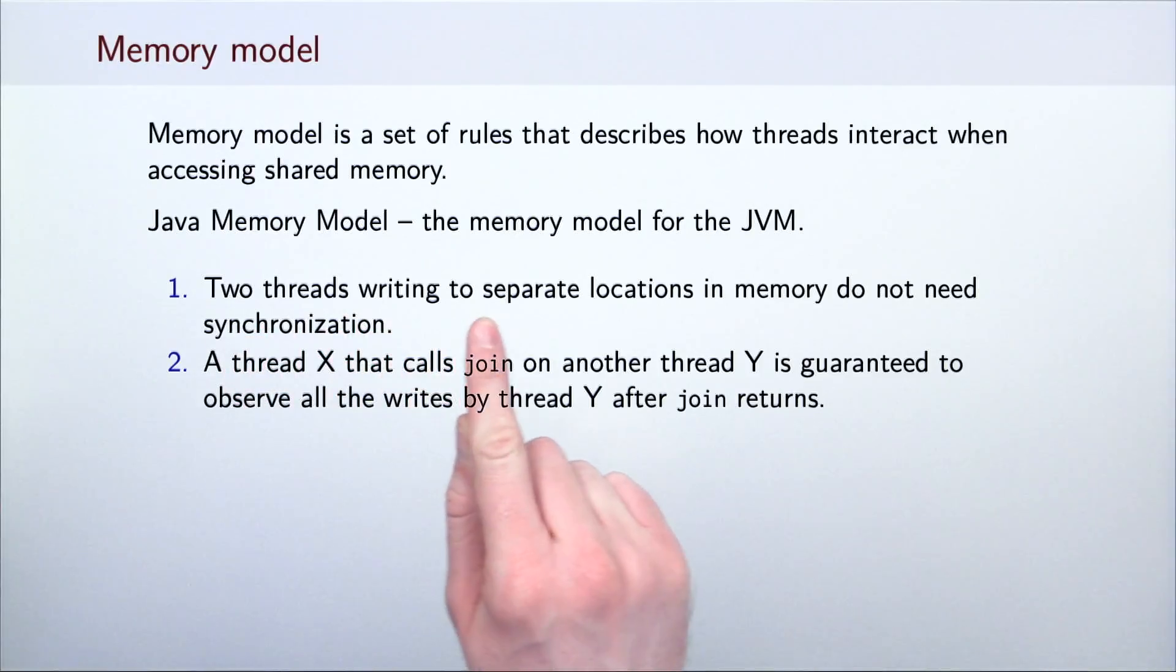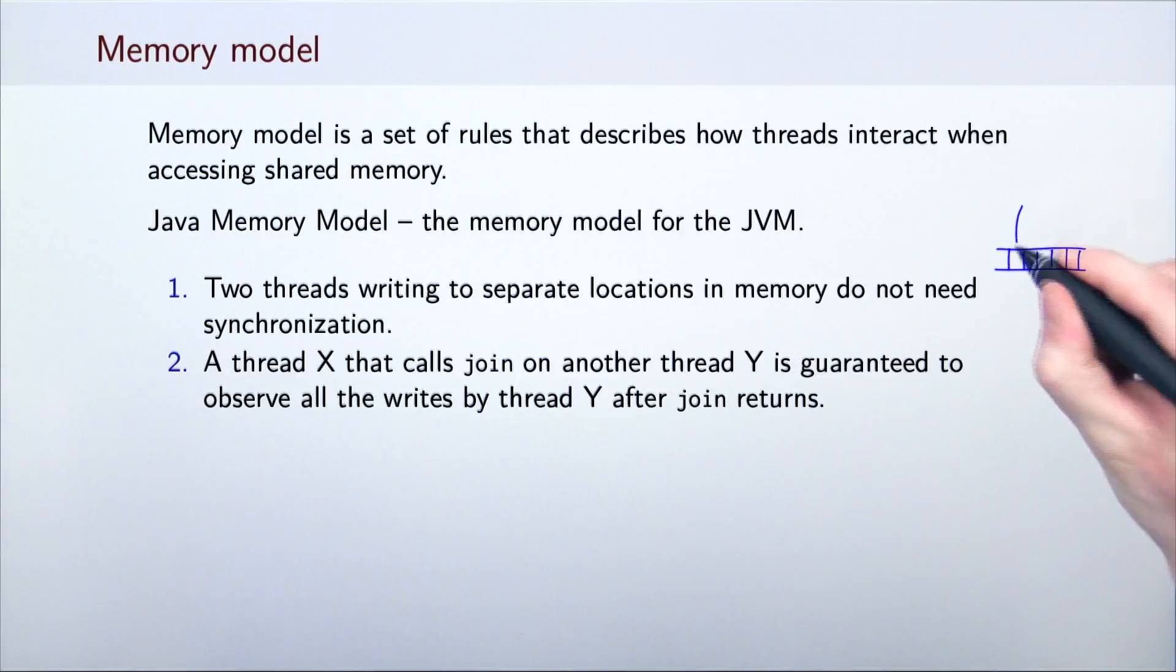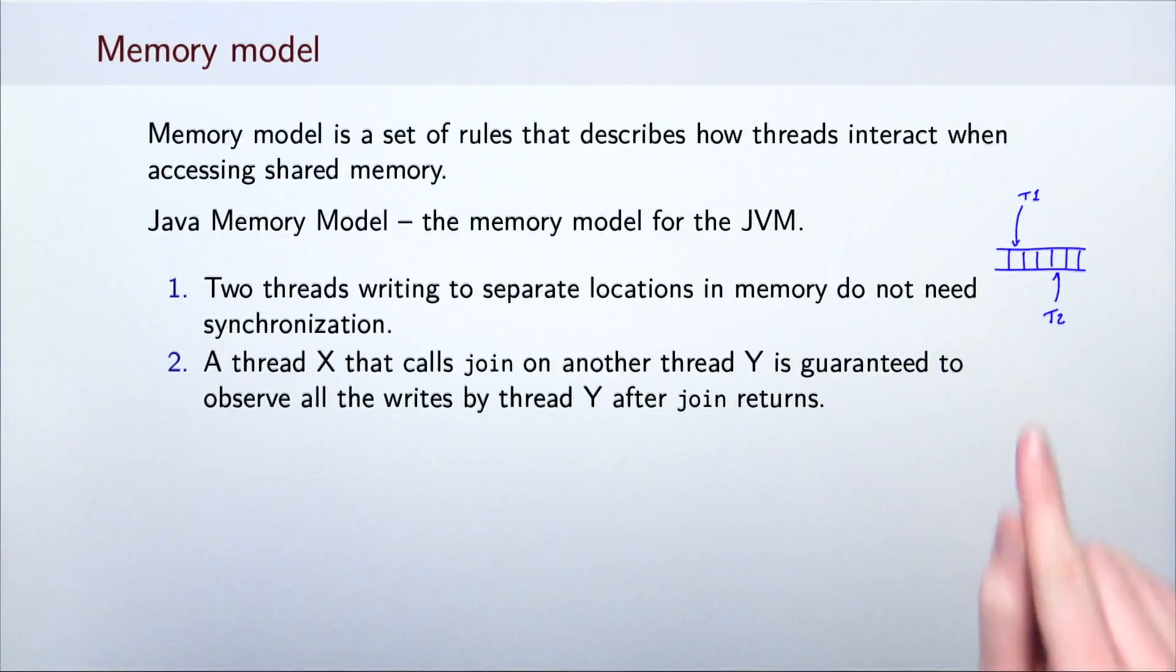Two threads writing to separate locations in memory do not need synchronization. For example, if thread T1 writes to this memory location and thread T2 writes to this one, they don't need to synchronize their writes in order to write the values correctly. There is no need for a synchronized statement in this case.